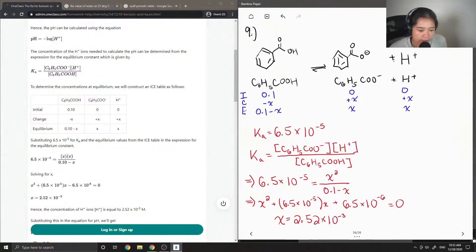So this X value is also equal to the concentration of our H plus. So therefore, to solve for pH, this is equal to negative log of the concentration of our H plus ion. So we just need to sub in our value for X, which was 2.52 times 10 to the negative 3. So you should get a pH equal to 2.6. This is very acidic.